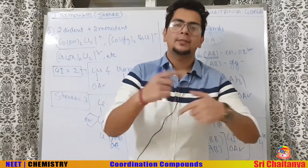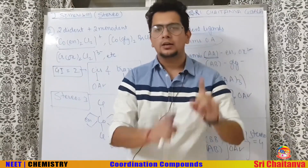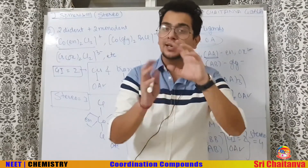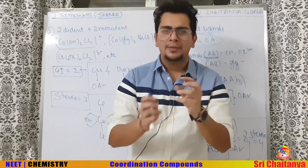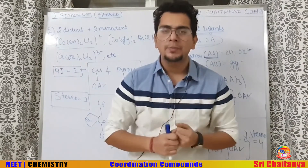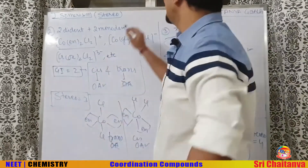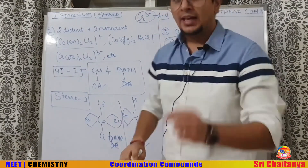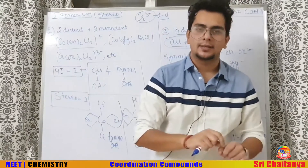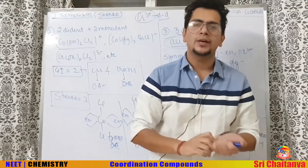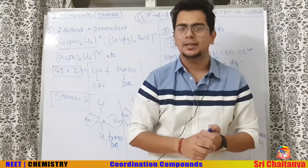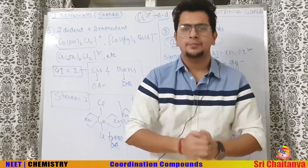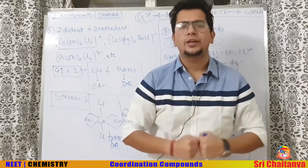To wind up: the color of ruby and emerald gemstones is due to d–d transitions of Cr³⁺ ions. This is a key boxed point in NCERT. We have covered each and every point on isomerism in complex compounds that can appear in the NEET examination. Practice will make you perfect. All the very best!